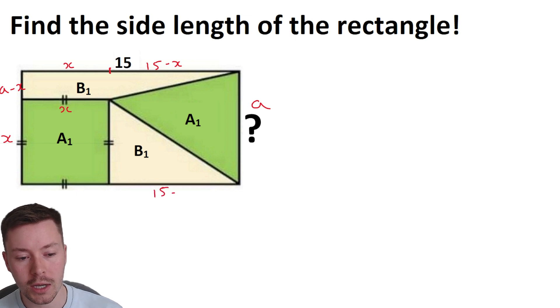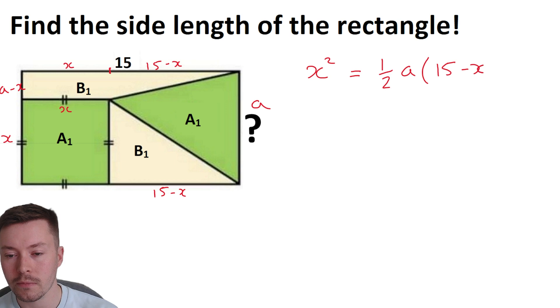Now at this point, we can start working out some areas and then equating them. So we're starting off with the A1s, well I've got from the left hand green square, I've got X squared, and that must be equal to a half, because it's a triangle, times A times by 15 minus X.